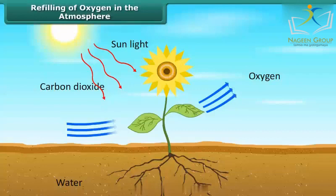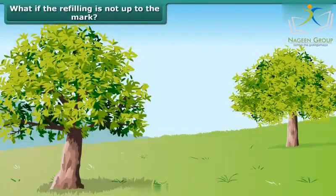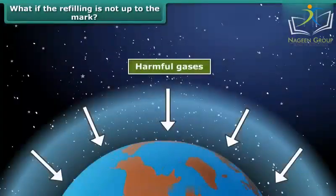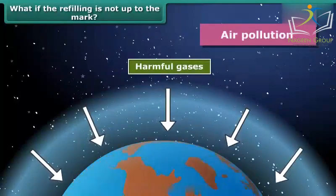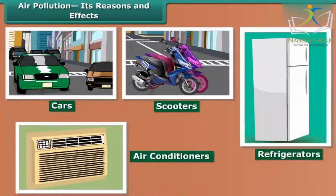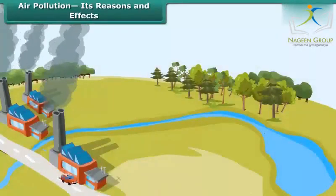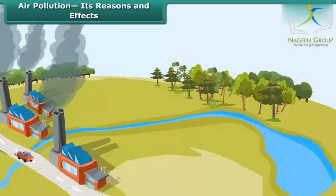What if carbon dioxide is pumped more into the atmosphere, beyond the capacity of plants to maintain the carbon dioxide-oxygen balance? What if other harmful gases are released into the atmosphere? The answer is: it results in air pollution. Cars, scooters, air conditioners, refrigerators, and many other things release harmful gases that pollute air. The enormous amount of carbon dioxide formed during burning of coal also pollutes air. The substances that cause air pollution are called pollutants — mainly gases discharged from industry and motor vehicles.